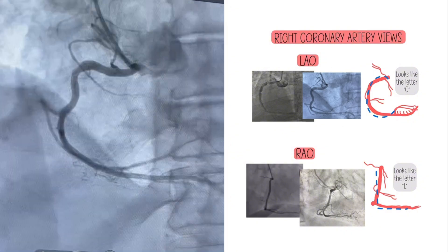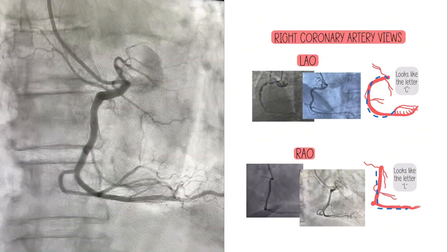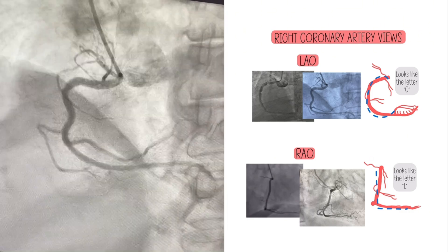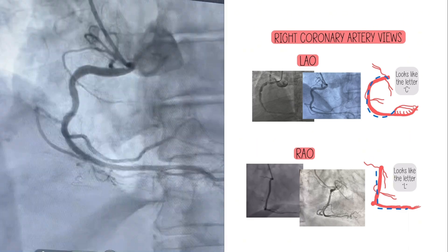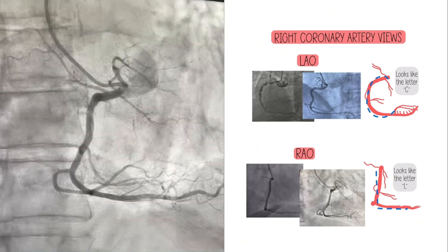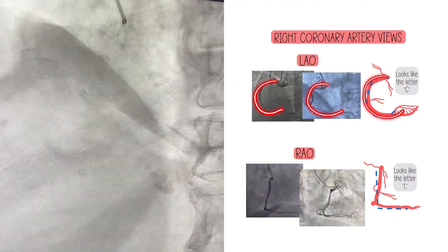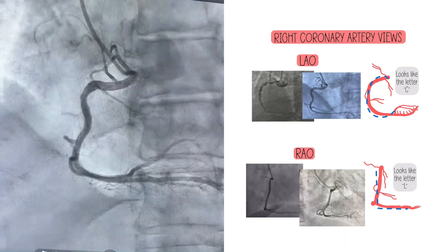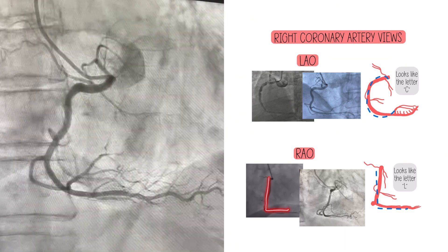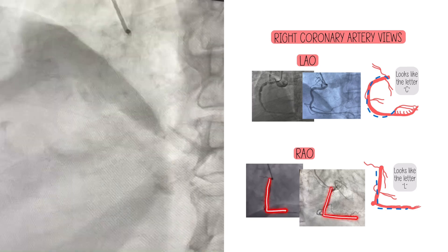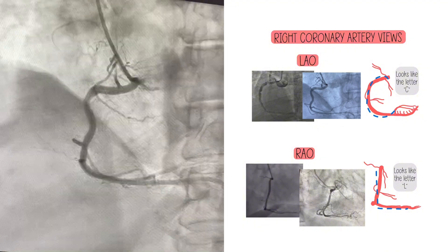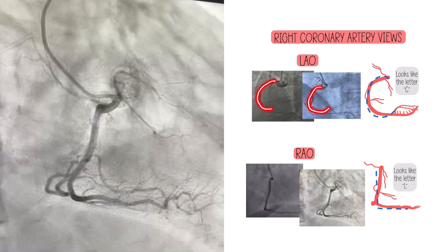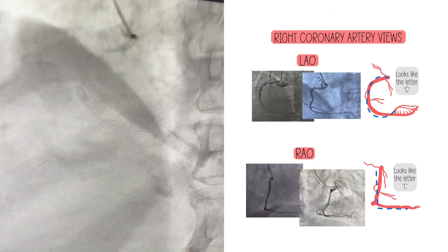In a straight LAO — left anterior oblique — the RCA is going to look like a C. I've given two different examples here, one of a diseased RCA and one of a relatively healthy RCA minus some tortuosity. You do have this kind of C shape. In an RAO, if you notice the difference in morphology, this one looks more like an L — a straighter L or one with a more acute bend — but you do have two straighter segments in the middle versus the curved segment you see in the LAO.